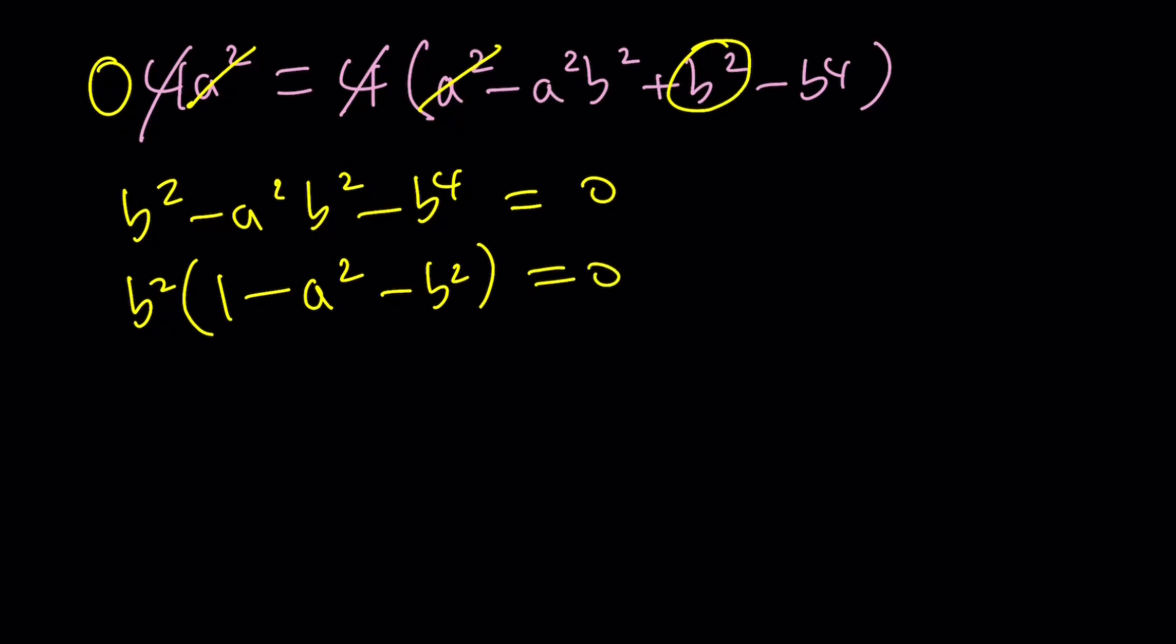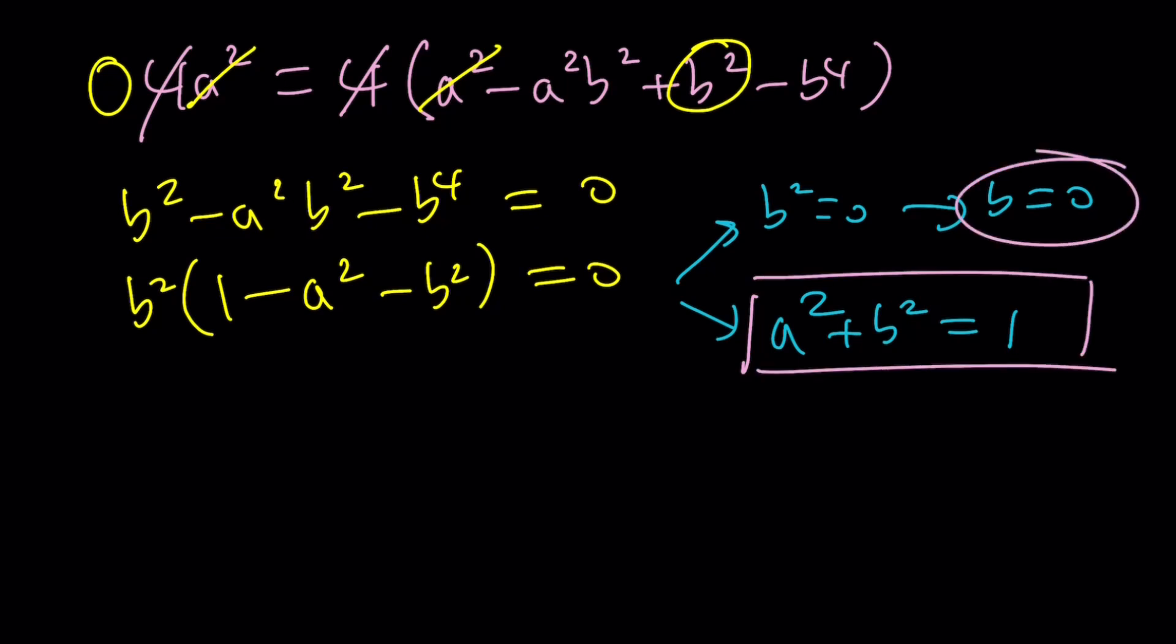Now, what should we do with this? Let's go ahead and factor it as much as possible and set it equal to 0 and see what happens. I want to start with this. b squared minus a squared b squared minus b to the fourth equals 0. And then from here, I can take out b squared. That's nice. 1 minus a squared minus b squared equals 0. Now, this gives us two results. Either b squared equals 0, which implies b is equal to 0, or 1 minus a squared minus b squared equals 0, which means a squared plus b squared is equal to 1.